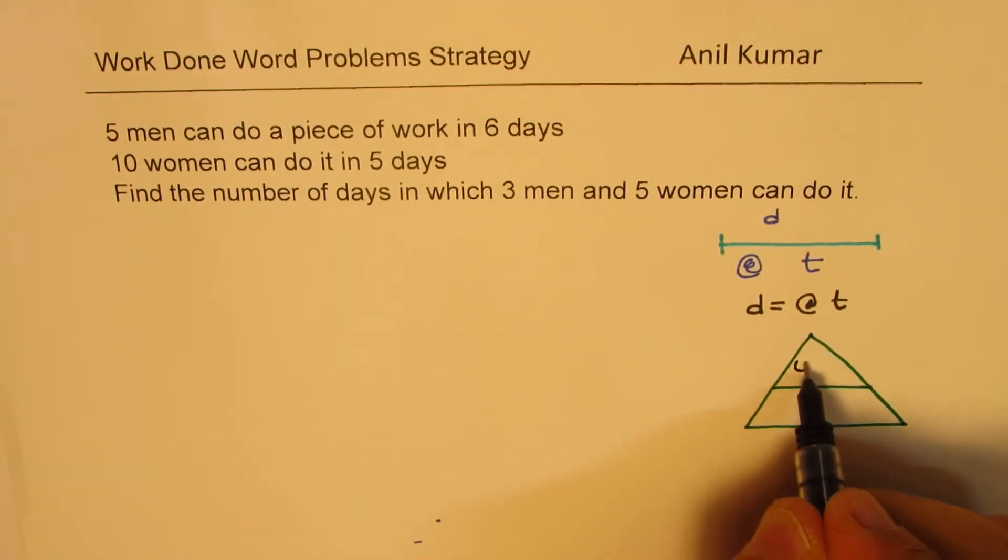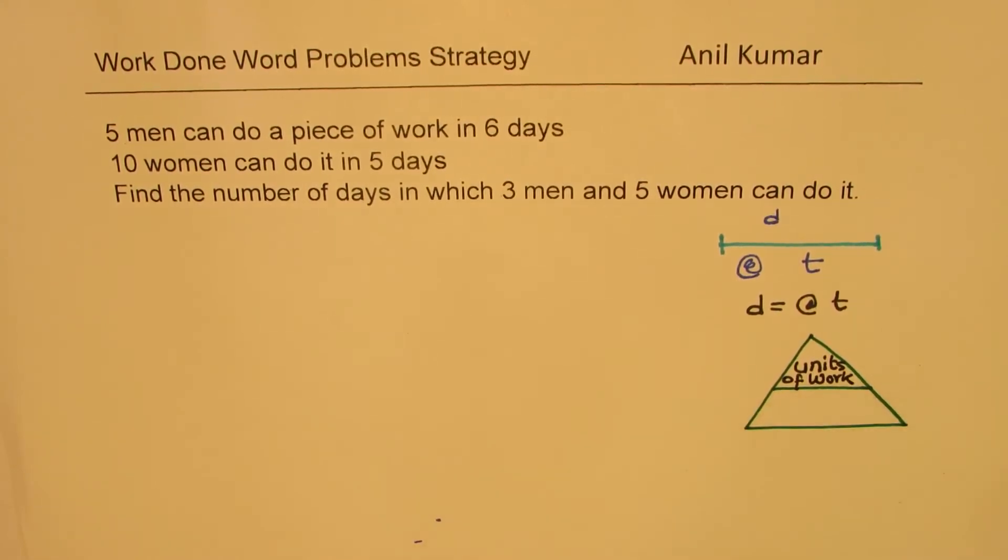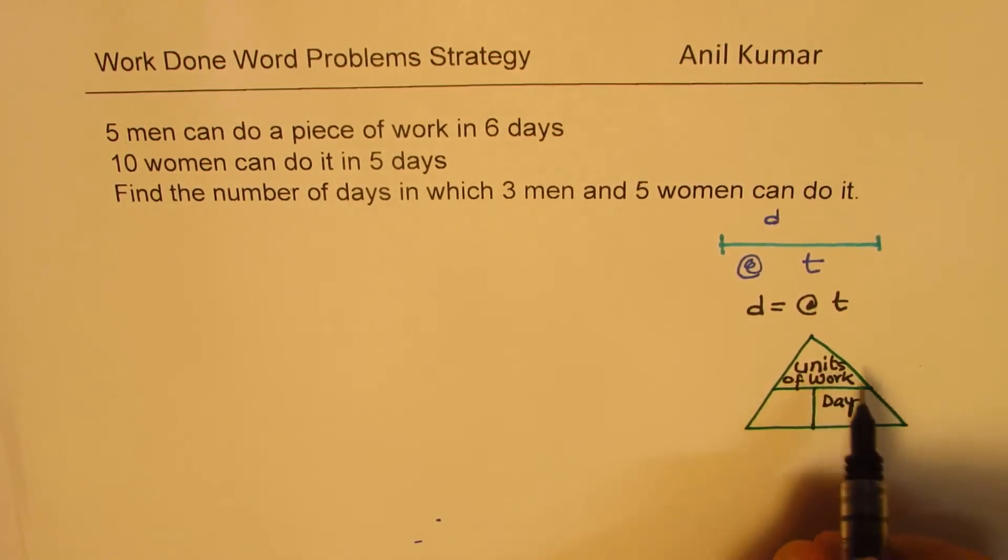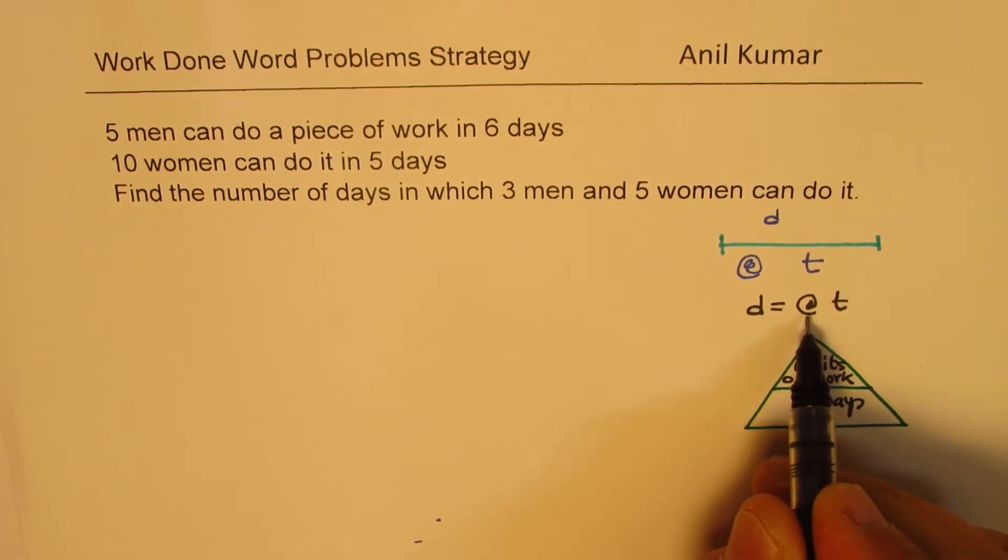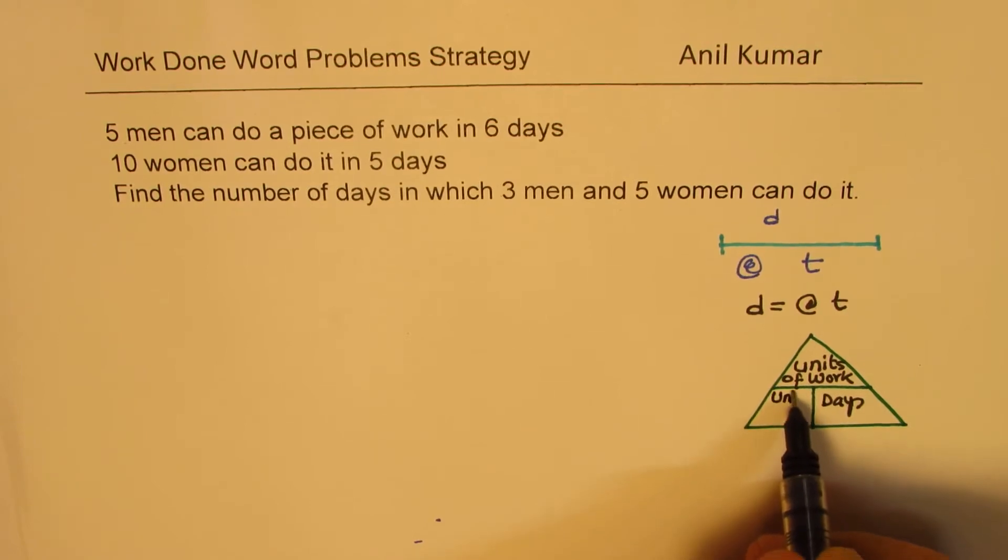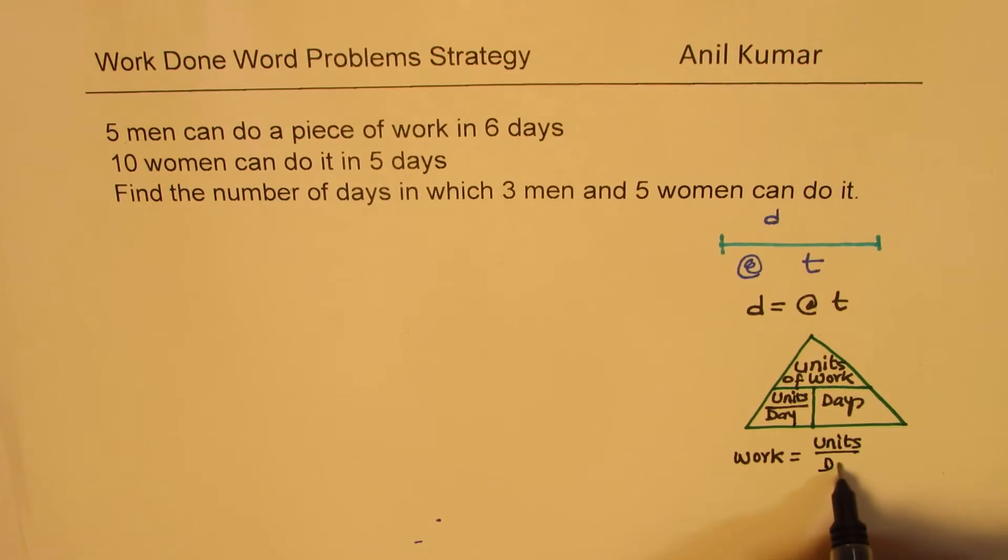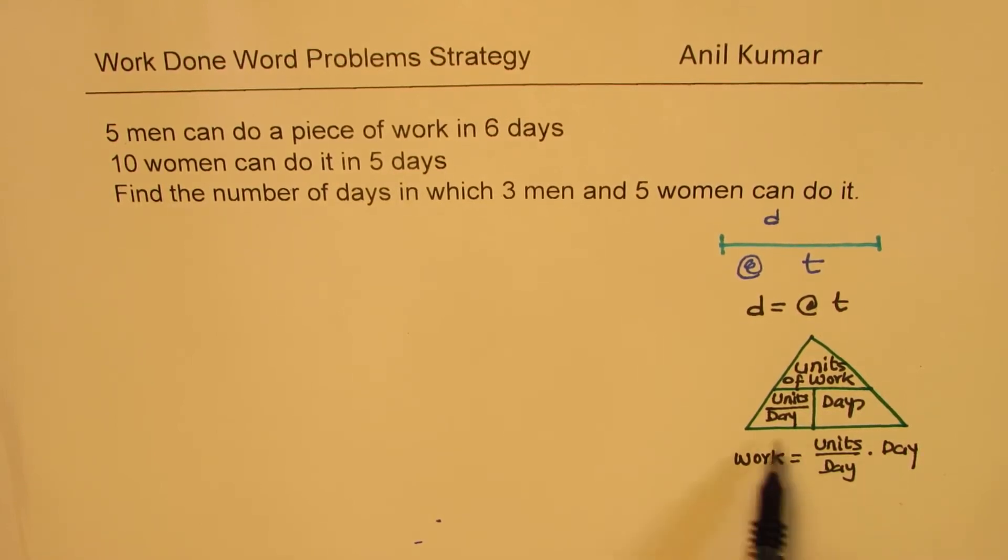what we will consider is kind of this triangle in which distance will be in some units, which we don't know. So, we'll just say this distance in some units. We'll call them units of work. And the rate of work will be units. Let's say this is in days. Time is in days in our case. Then this would be units of work done in a day. That is the rate. Rate is per day. So, this is units per day. That basically means we could always write work as equal to units per day times days.